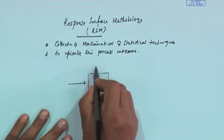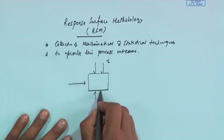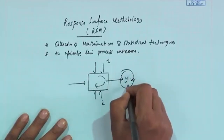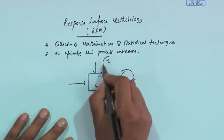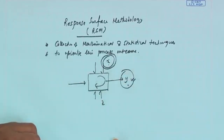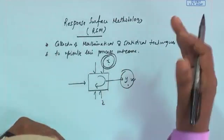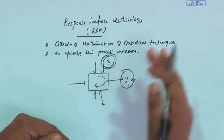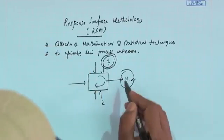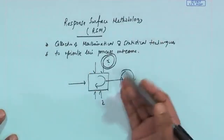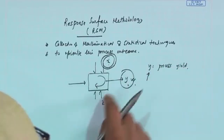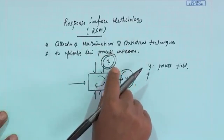This is my process: inputs — controllable x, uncontrollable z — process steps, and you get output. The question is that I want to optimize this output. Where should I set x, in what zone, so that I will get the optimum y? If y is process yield, then you want to set your controllable parameters such that y will be maximum.